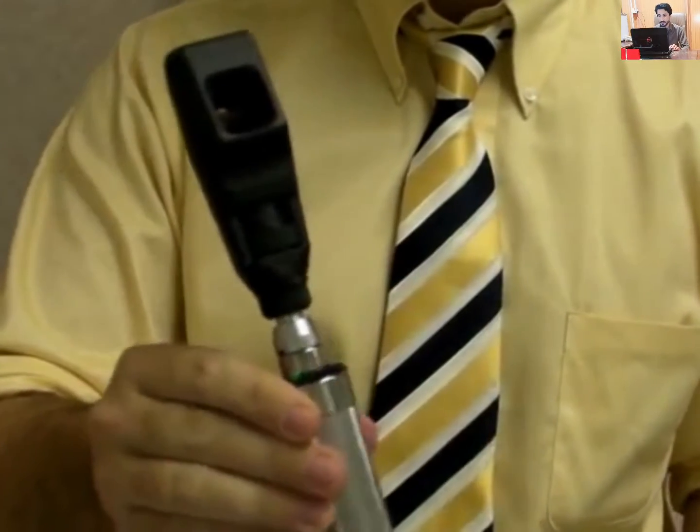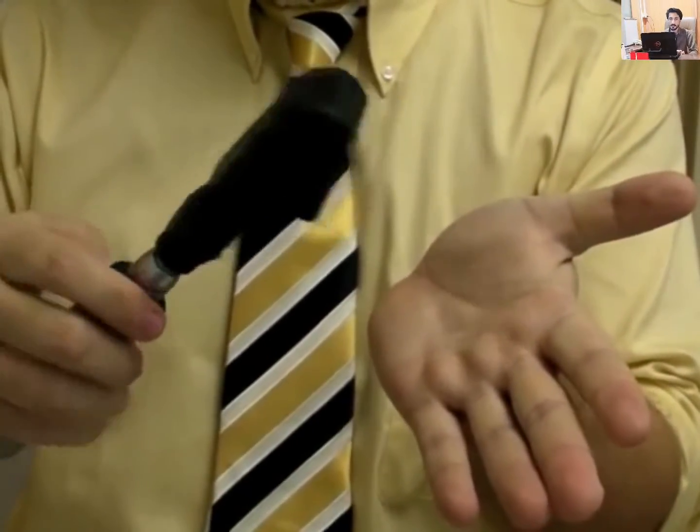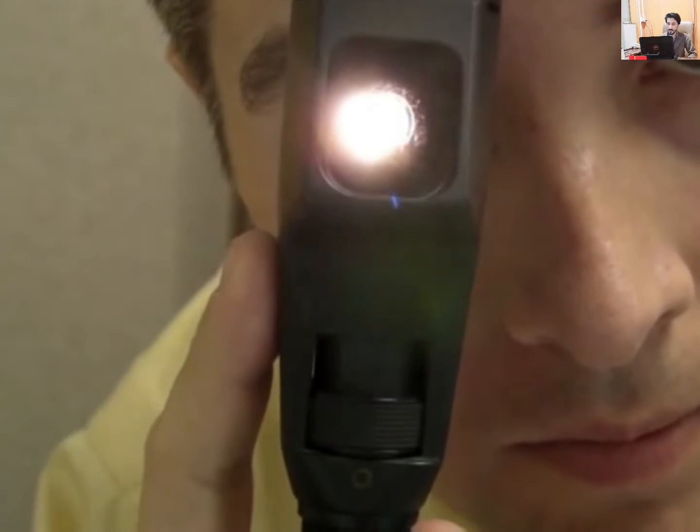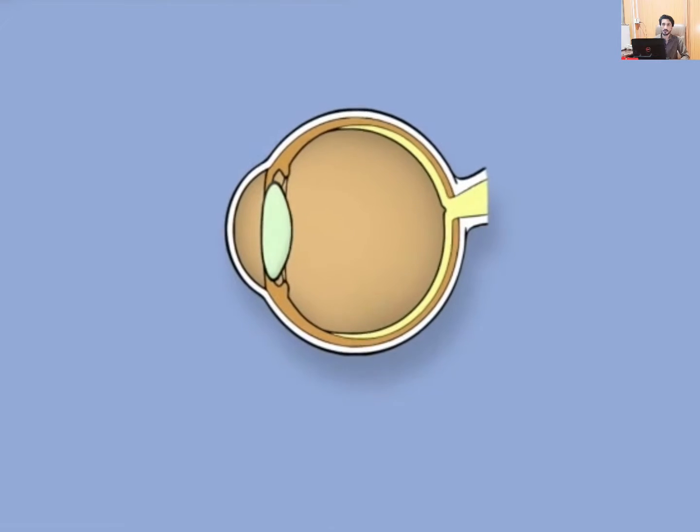So this is the machine we use. This is called a retinoscope. And a retinoscope is basically just a light, a little beam splitter inside of it, that you look through and you shine this light in your patient's eyes and you look at the red reflex and how that red reflex moves in order to get an idea of what the prescription is. So here's the theory behind it.